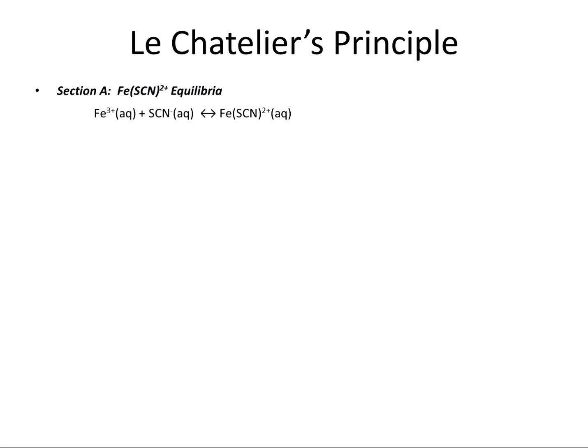The first equilibrium we are going to look at is an iron thiocyanate complex. We'll be looking at an iron 3+ complex in aqueous solution, and we'll be adding thiocyanate ions to it. The thiocyanate will bind to the iron to form the iron thiocyanate complex. The nice thing about this reaction is that we'll be able to detect changes just by observing colors — transition metal complexes are very bright and colorful, and changes are usually followed by a color change, so it's easy to observe.